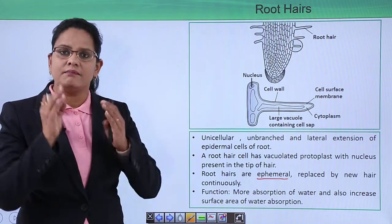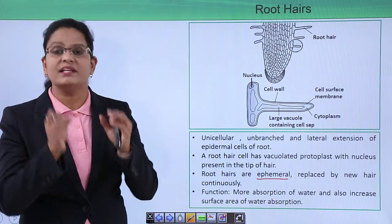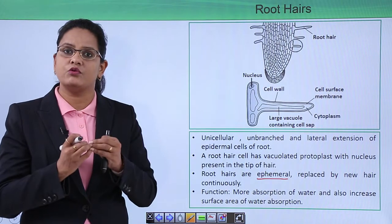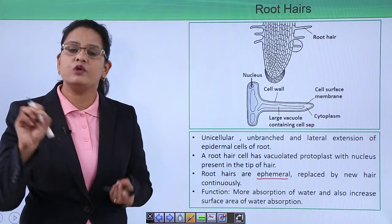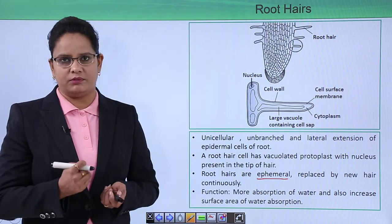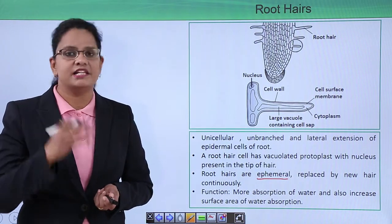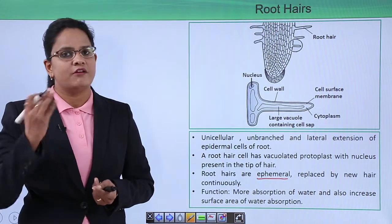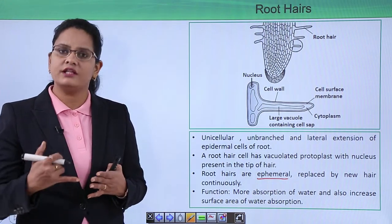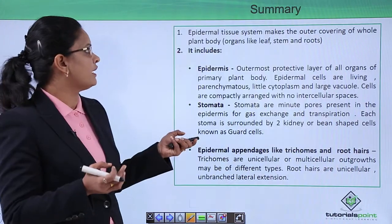All the functions of the root epidermis relate to the root's role in absorbing water from the soil. Root hair are single-celled and thin, with a nucleus and a large vacuole — all these properties help them get between soil particles, absorb water, and transport it to the rest of the plant. Together, the dermal tissue system's properties justify its three main functions: secretion, protection, and absorption.